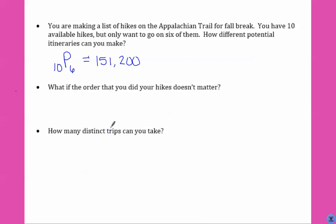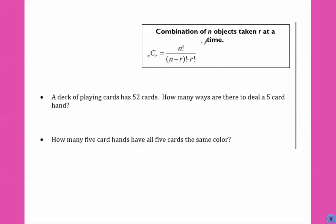What if the order that you did your hikes in didn't matter? Then, it's no longer a permutation. It would be what's called a combination, which on your calculator, it's in the same menu, you go to math, you go over to prob, and it's number three for NCR. Now, if you notice, both of the formulas have this little exclamation point in it, it's called a factorial.